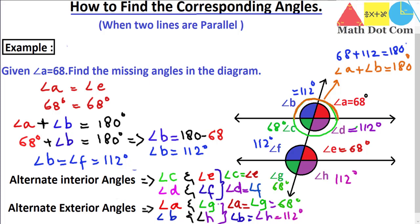This is how you can find the value of corresponding angles when only one angle is given and the two lines are parallel. In our next lecture we will see how to find corresponding angles if the two lines are not parallel to each other. That's all from today's lecture. Thank you.